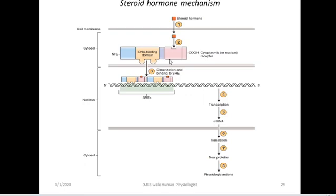This other mechanism is called the steroid hormone mechanism, and it is common to all steroid hormones. The steroid hormone is lipid-soluble, so there are no membrane receptors for it. It enters and penetrates the cytosol, where it binds to the cytoplasmic receptor. This receptor has a DNA binding domain and a hormone binding domain. When binding occurs, they form a hormone-receptor complex.